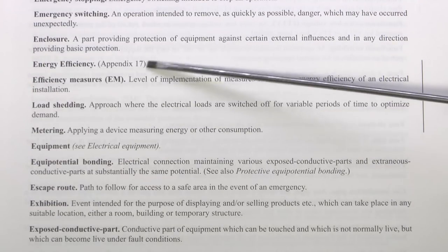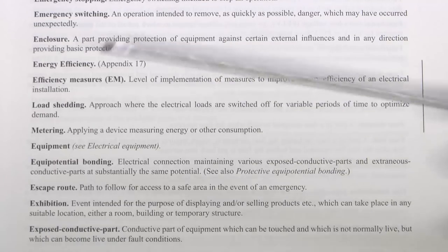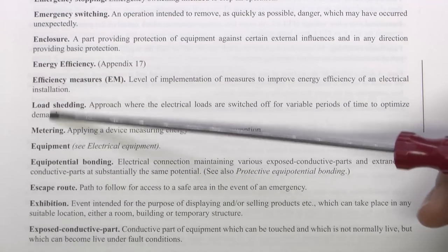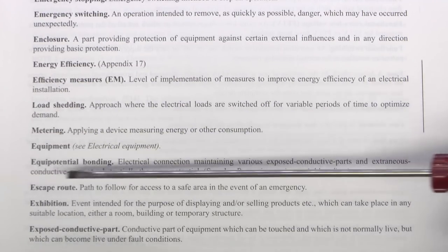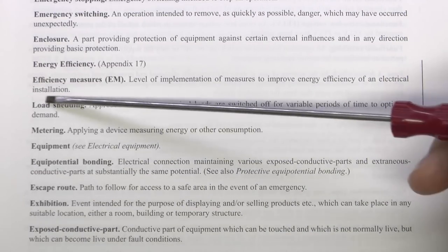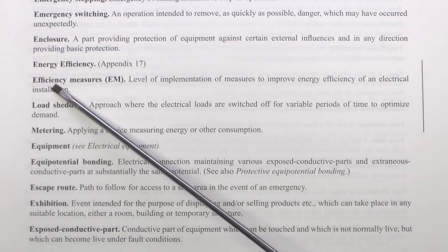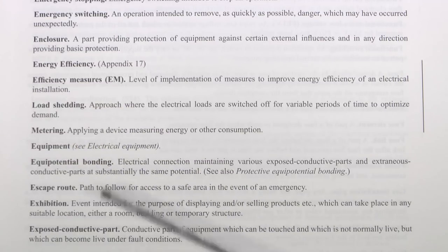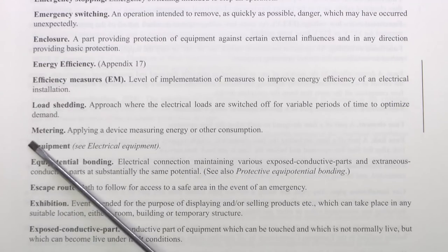Another new item, which has its own Appendix 17 in this case, is Energy Efficiency — so all of this is new. Now you may notice that with the E section we go straight onto L and M, because these should have been indented as they should actually be under Efficiency Methods — but for some reason they weren't indented properly. So Energy Efficiency, or Efficiency Measures, and then Load Shedding is part of that, and Metering is also part of that as well. And those are all new.